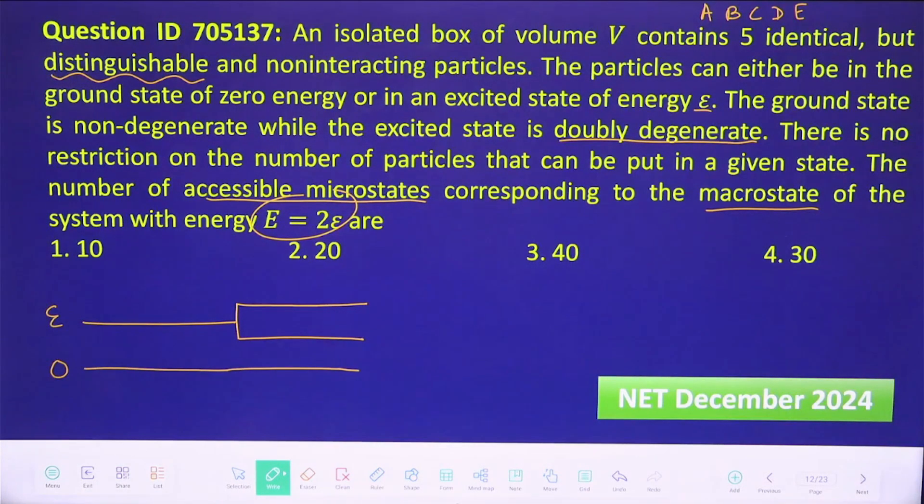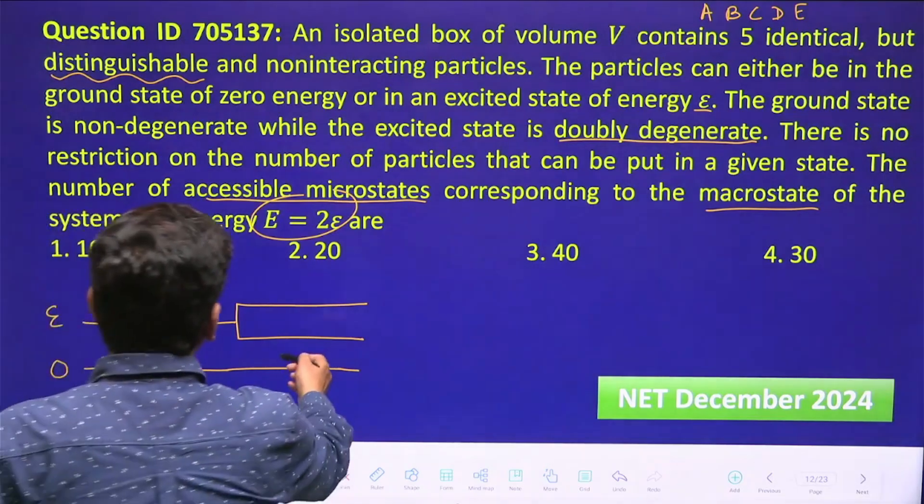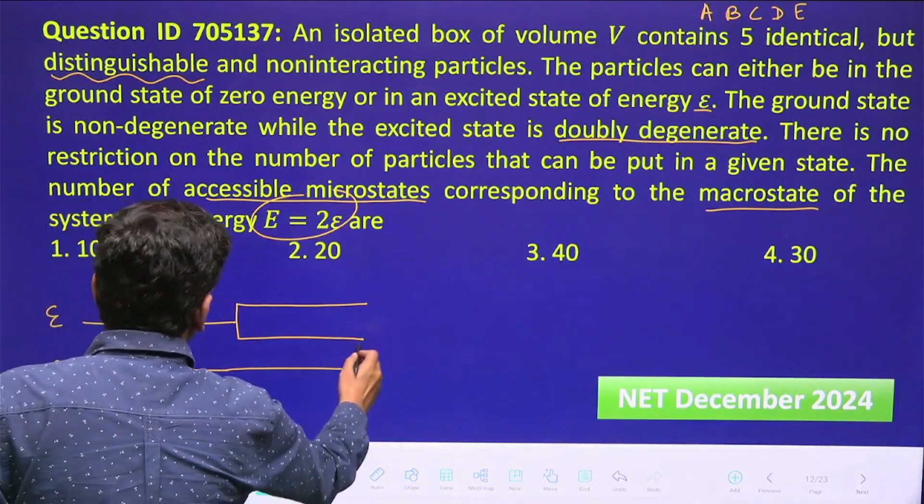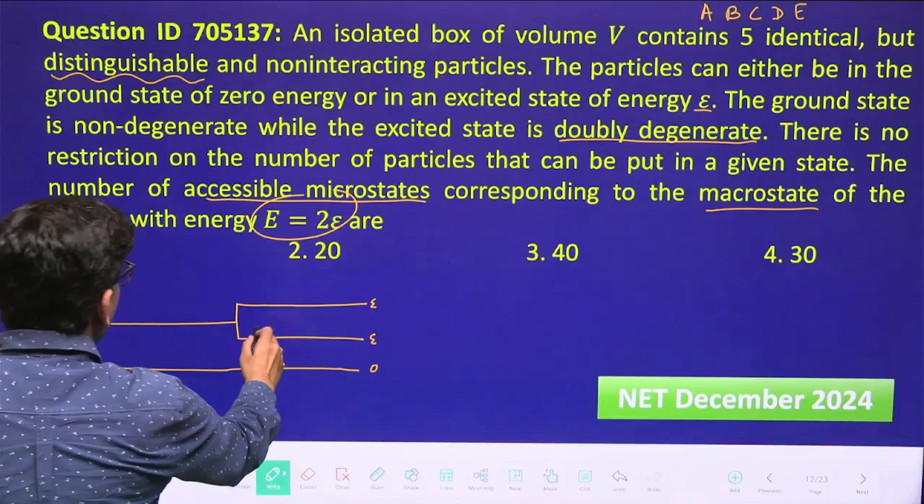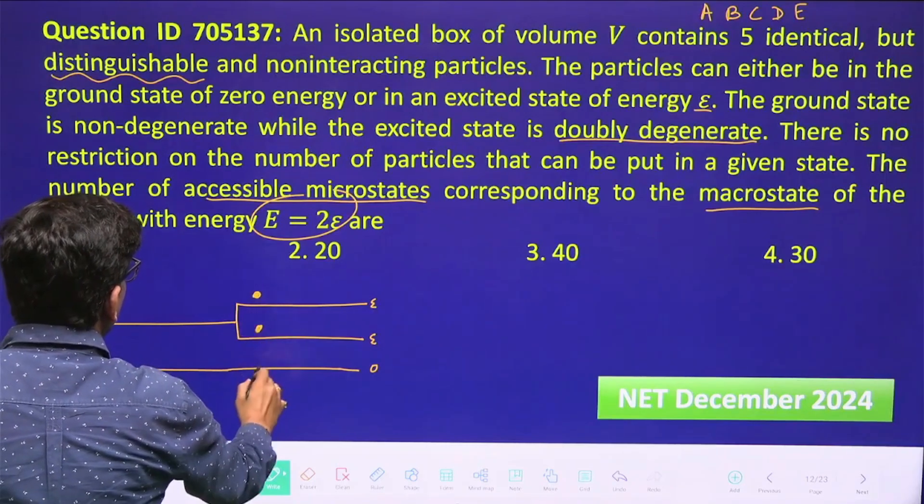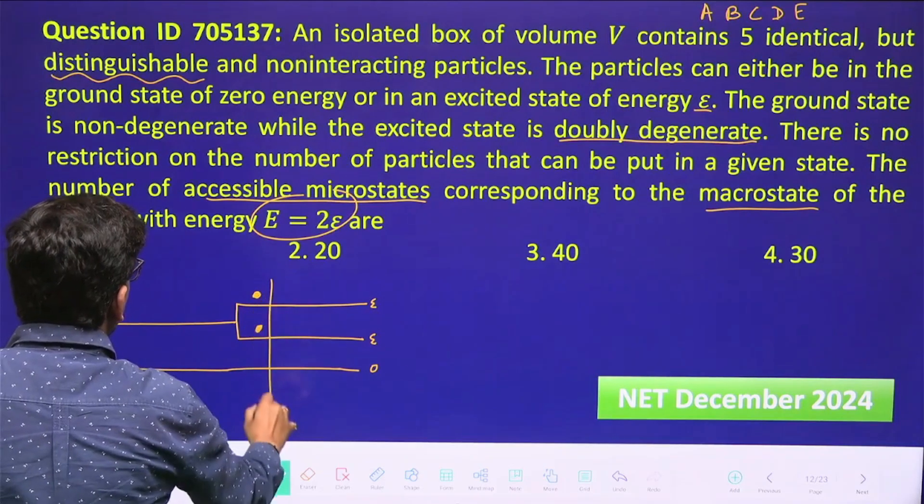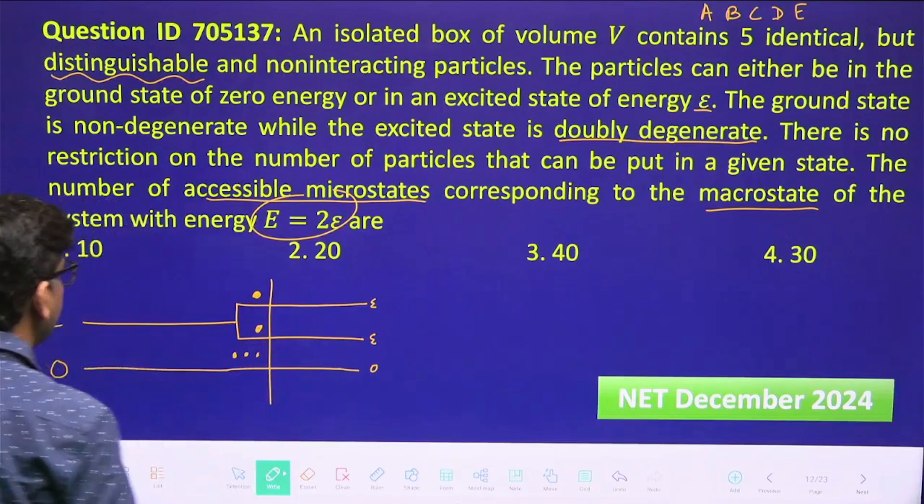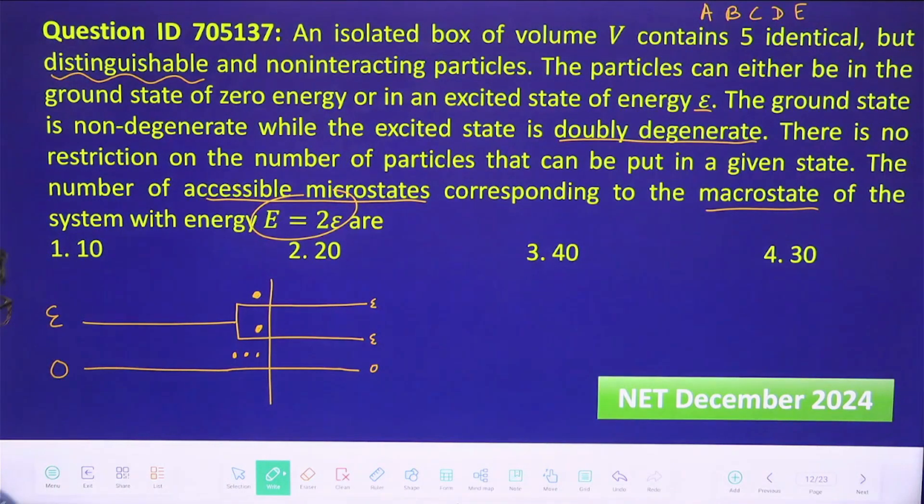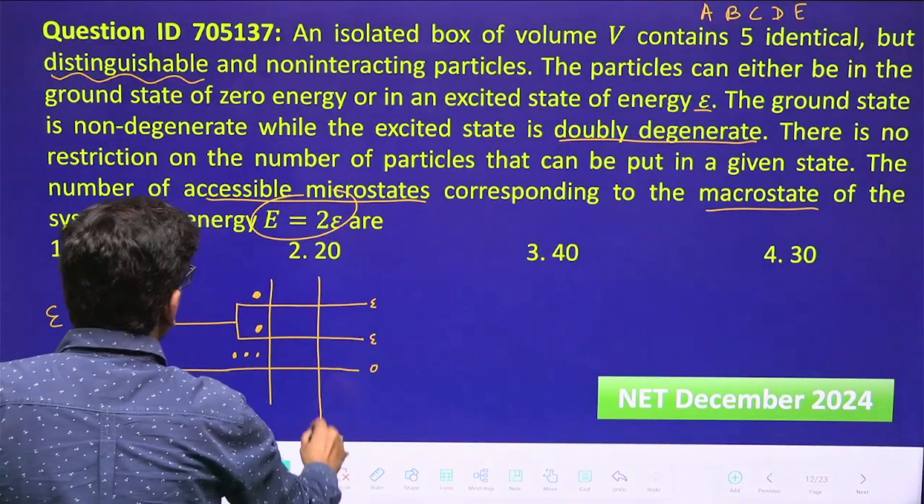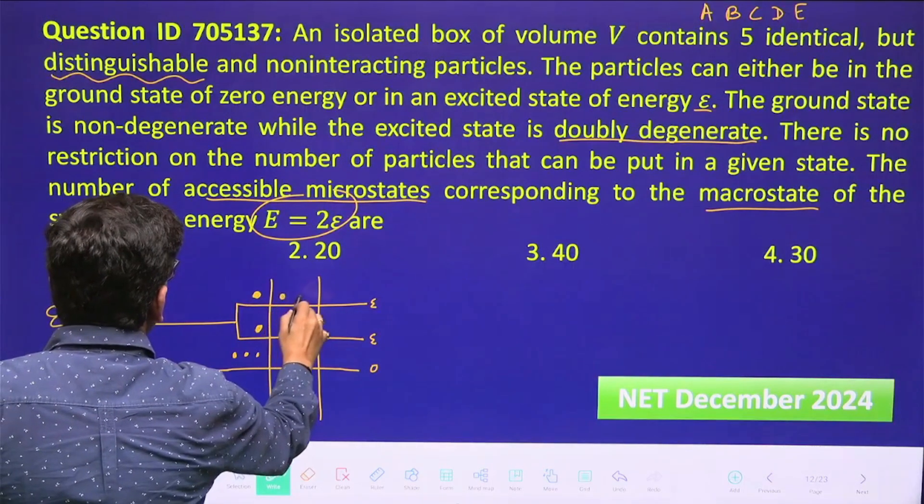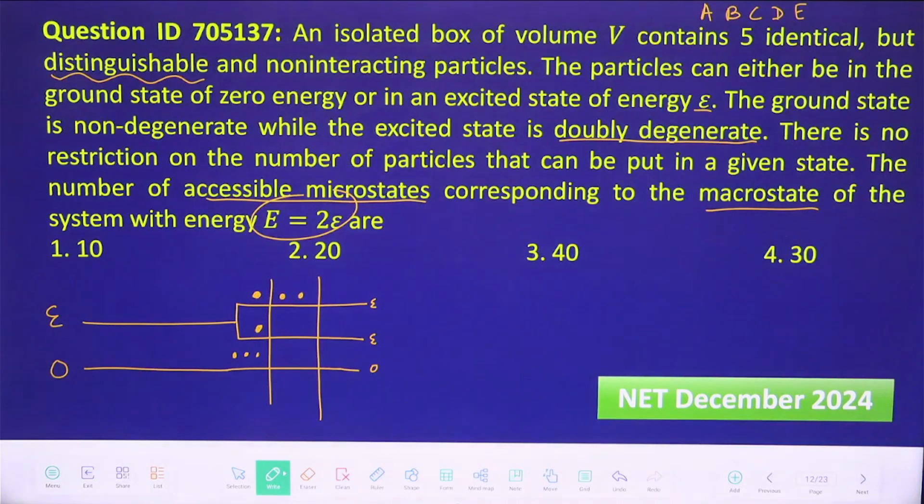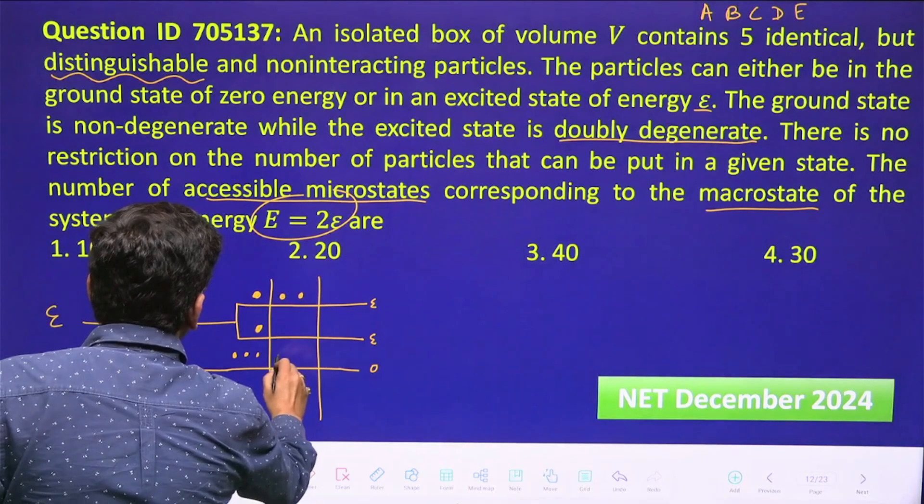The total energy of these five particles should be 2e, so we have to consider only those. Let's see how 2e energy will come. These two are having energy e, this is having energy zero. So 2e can come when one particle is here, one particle is here, and three particles are here. Then total energy is 2e. Or one particle is—two particles are here, so this will become 2e energy, and three particles are here.